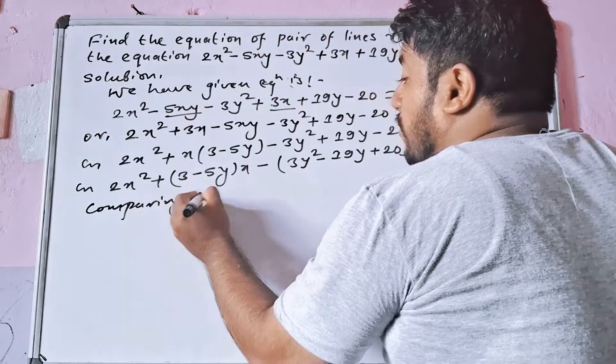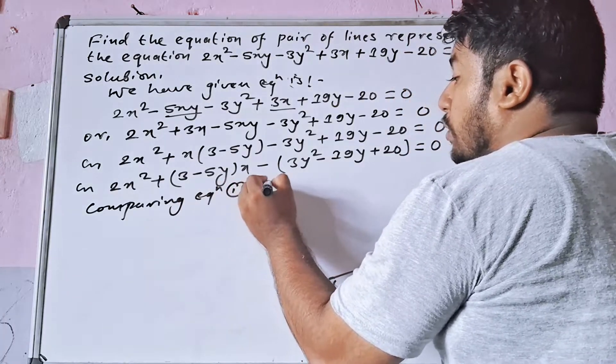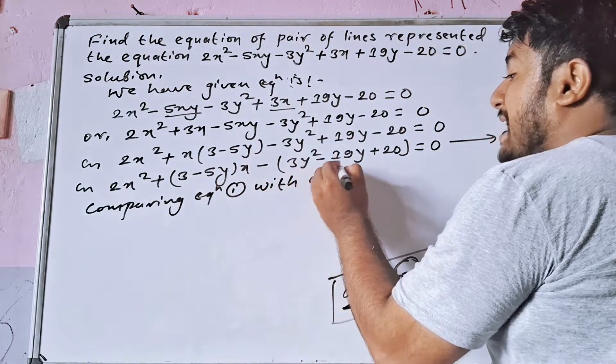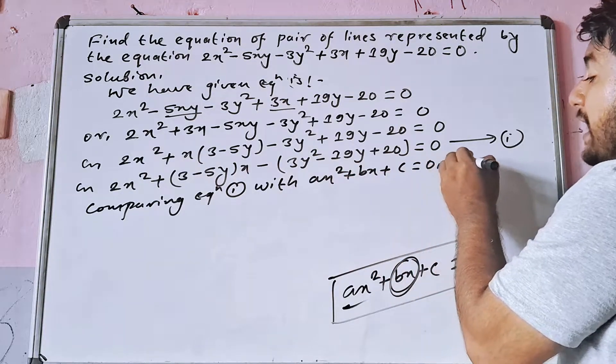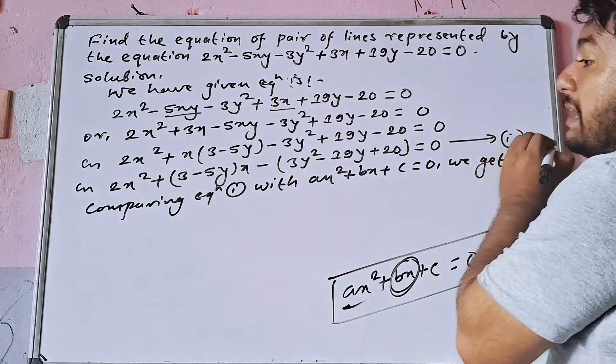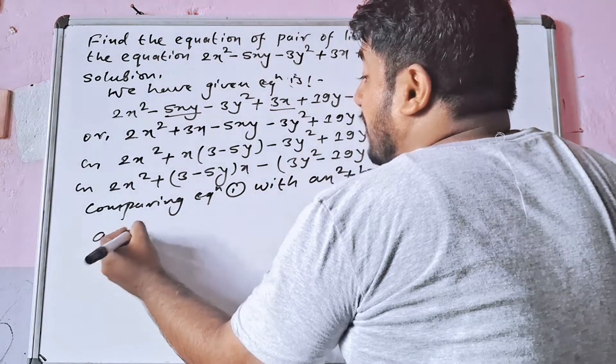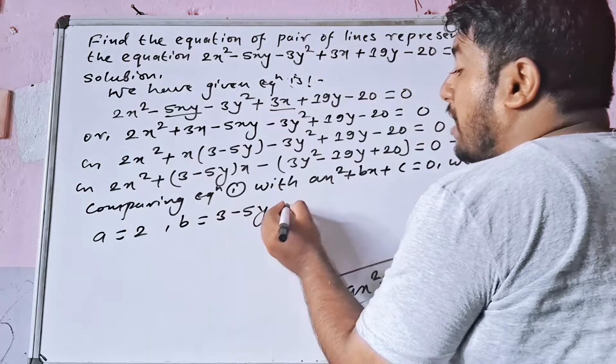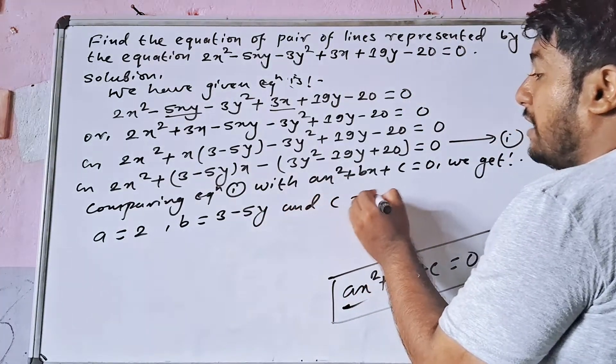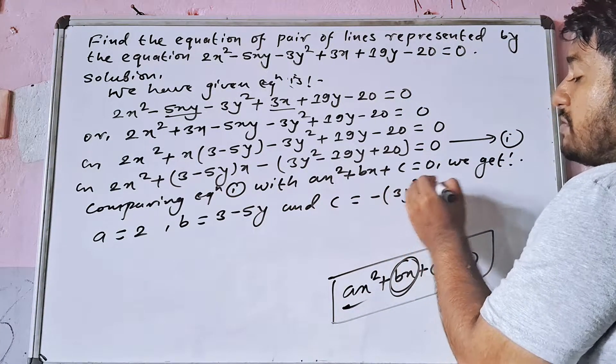Comparing equation one with ax square plus bx plus c equal to 0, we get a equal to 2, b equal to 3 minus 5y, and c is equal to minus 3y square minus 19y plus 20.